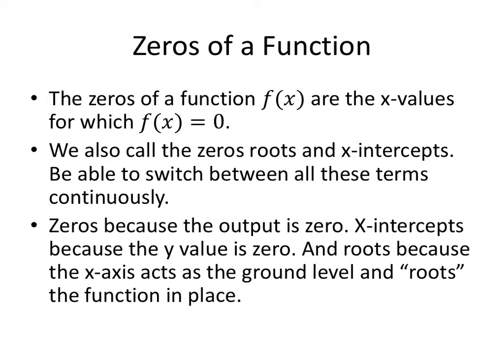Zeros of a function. Now, we've talked about zeros a couple of times. We talked about x-intercepts. We talked about zeros in section 1.4 lecture as well. The zeros of a function, f of x, are the x values for which f of x equals zero. We also call the zeros roots and x-intercepts. Be able to switch in between these three terms continuously. We use the term zeros because the output is zero. X-intercepts because the y value is zero and it's on the x-intercept. And roots because the x-axis is the ground level and the roots keep the function in place.